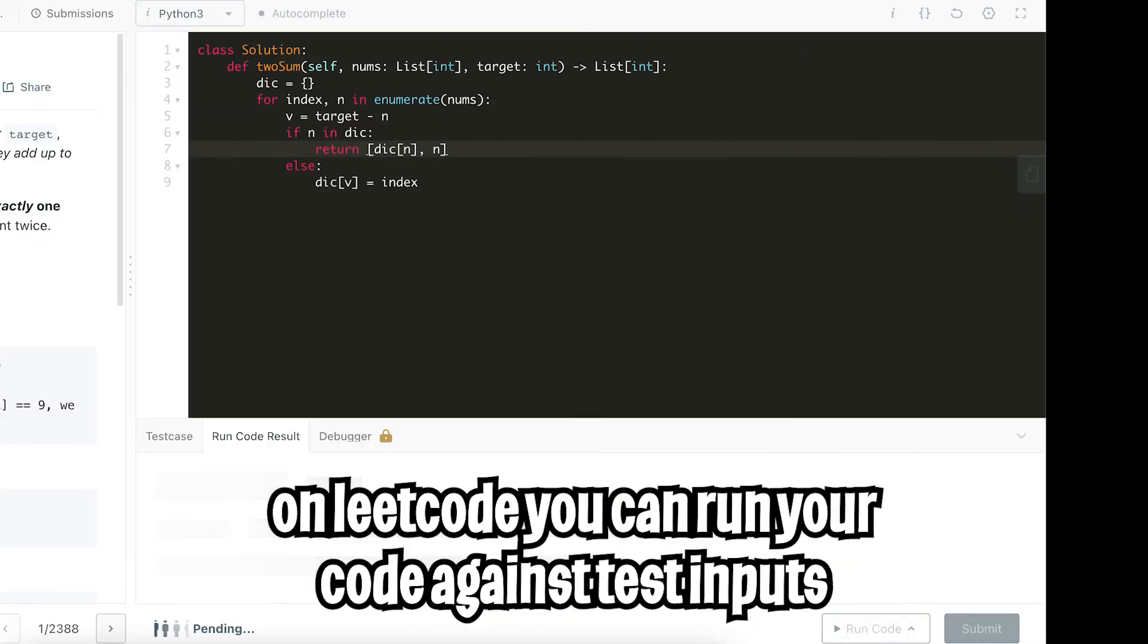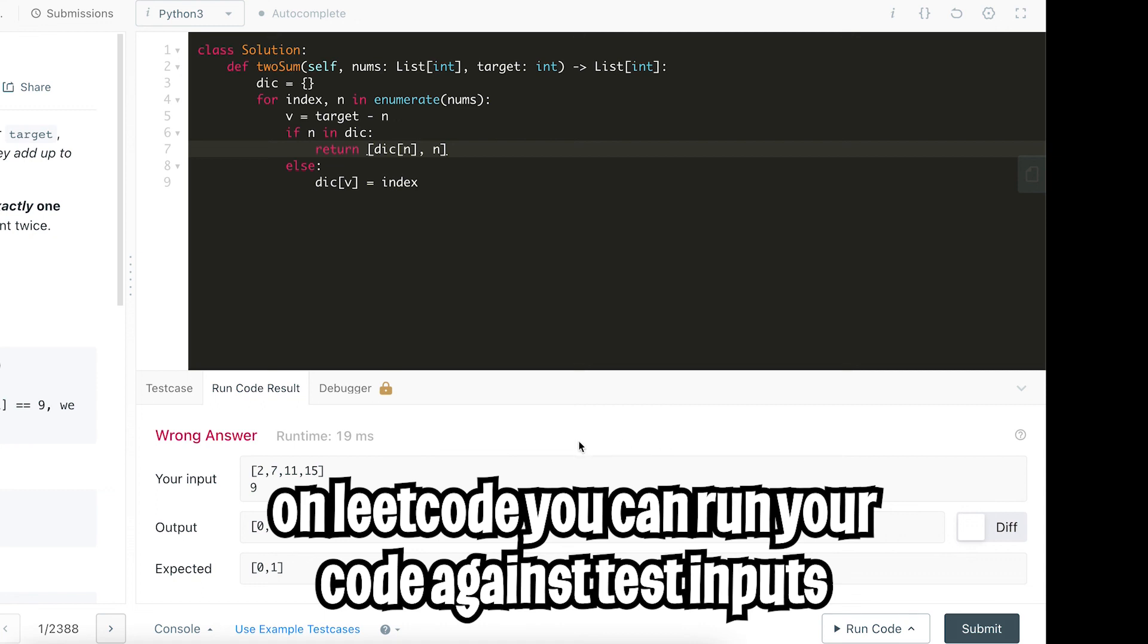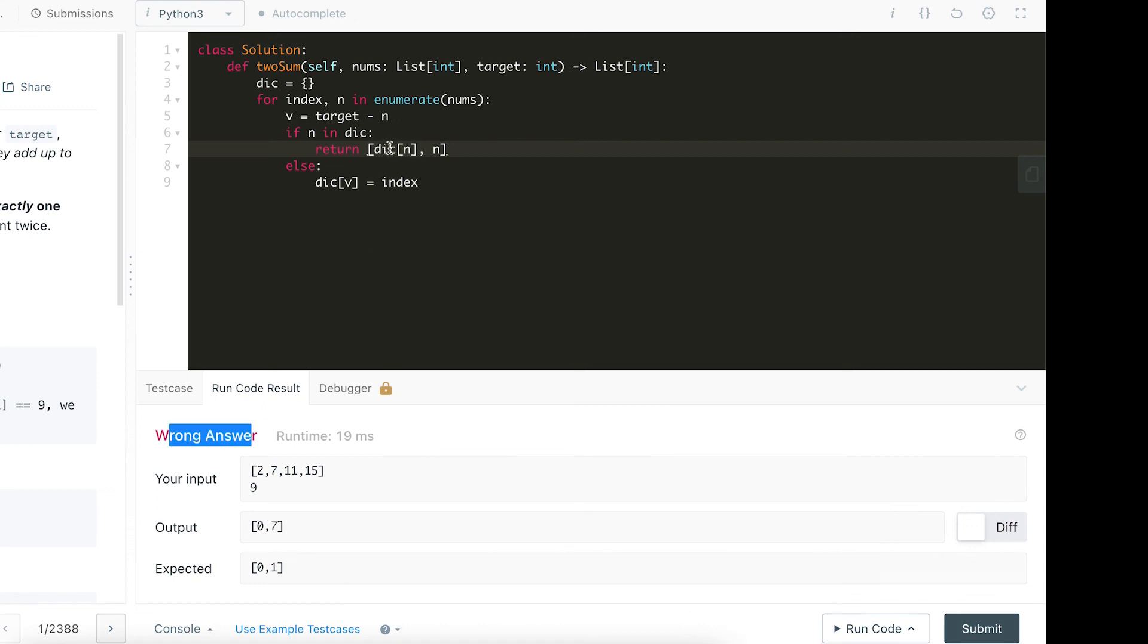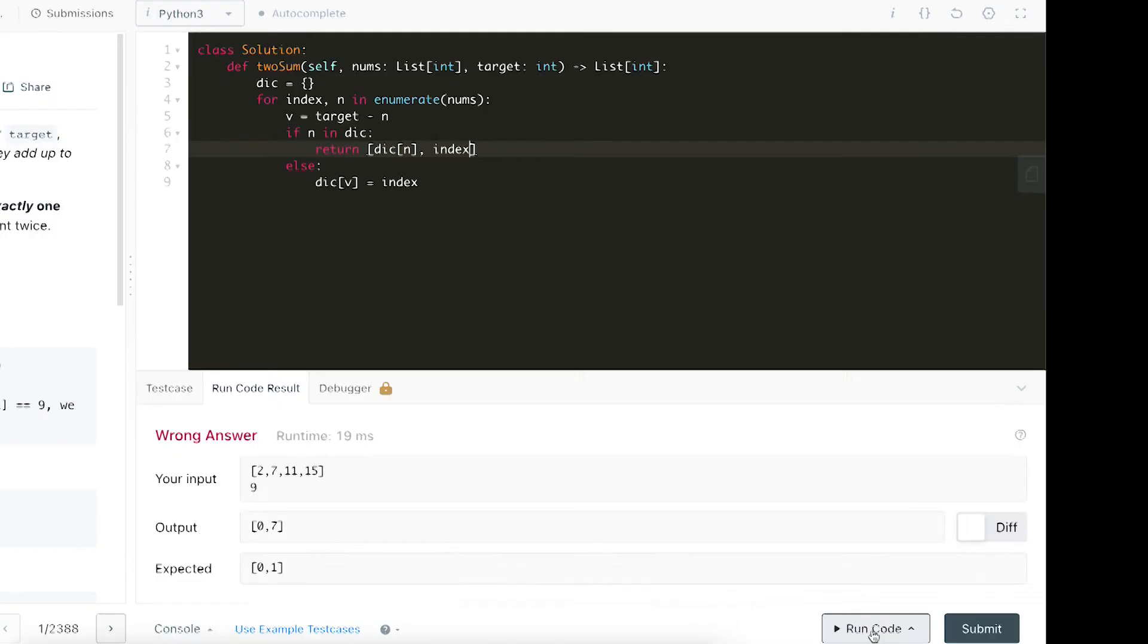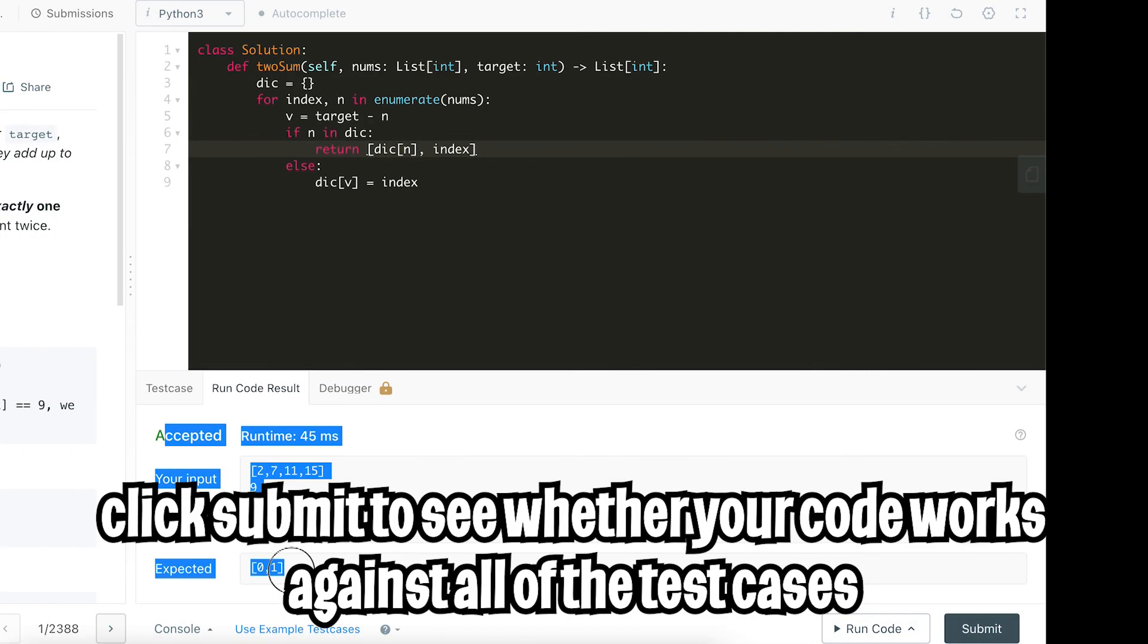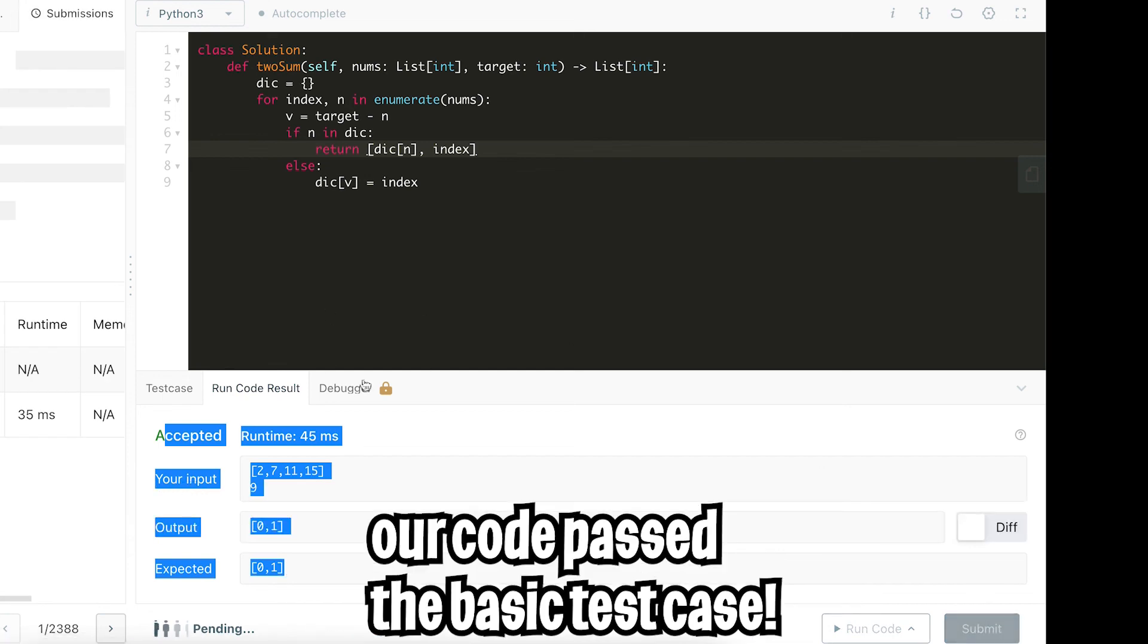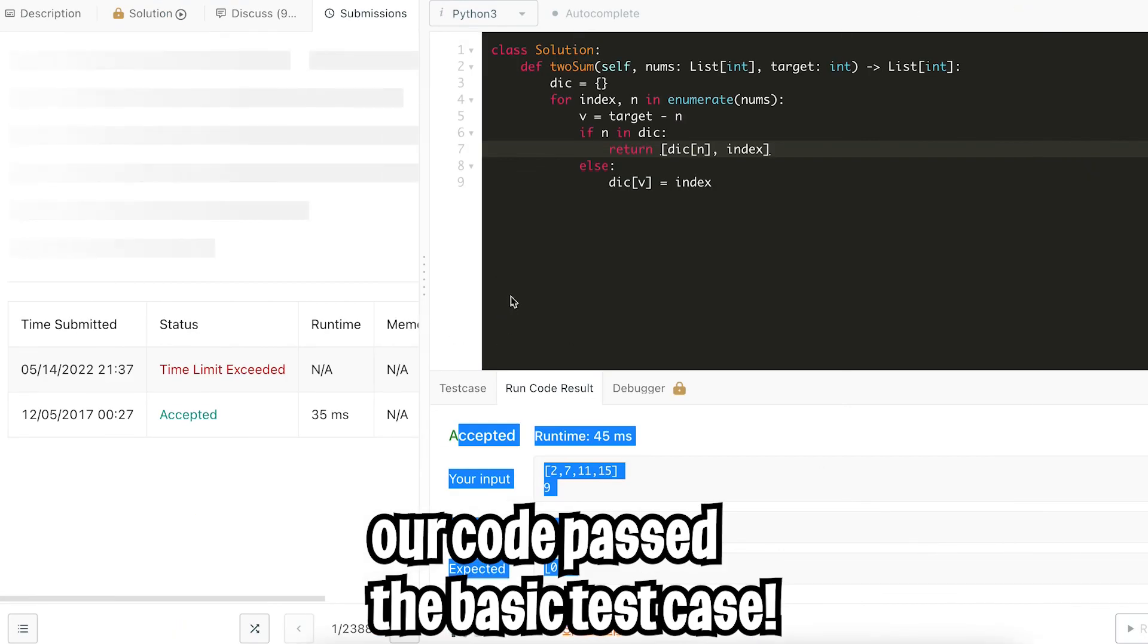And now let's click run code. Looks like our solution is wrong. So now looking at the code, it looks like we're also returning the end value here. But instead, we want to return the index. So let's copy index and let's remove this. And now let's click run code again. Awesome. Looks like our code worked. Now let's click submit and see if it passed all the test cases.